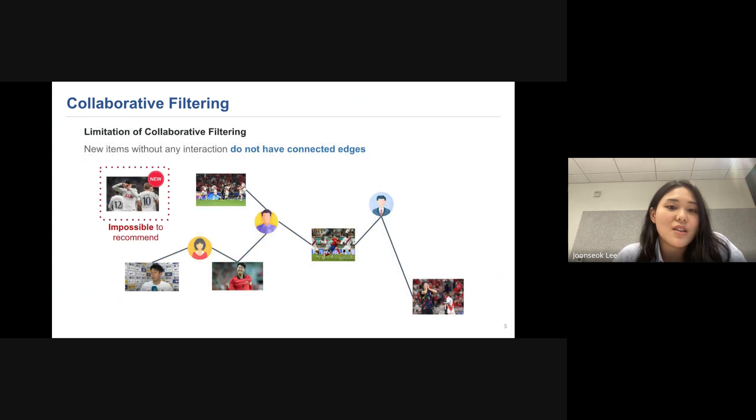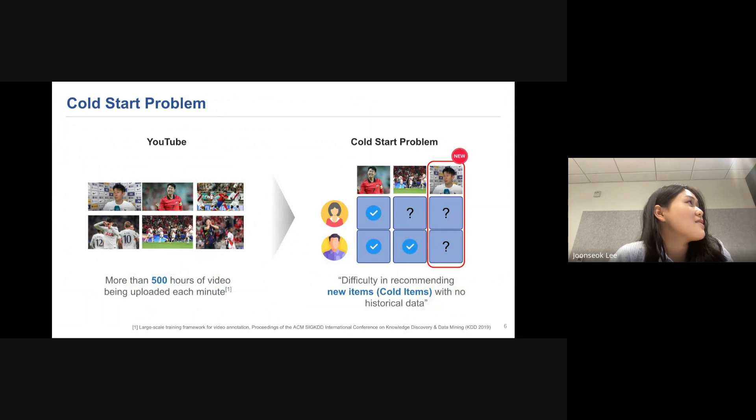However, there's a limitation for collaborative filtering. If new items without any interaction come into a system, because they do not have any historical data, they do not have any connected edges. Therefore, they are impossible to recommend. And this is the so-called Cold Start Problem, which is difficulty in recommending new items to cold items with no historical data. And this problem is critical in real life, because for example, in YouTube, more than 500 hours of video are being uploaded each minute.